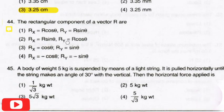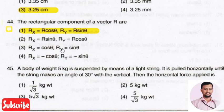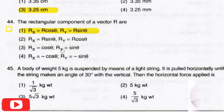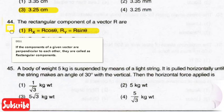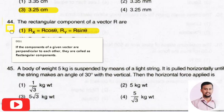The next question: the rectangular components of a vector R. The right answer is option 1 — the rectangular component in the x-direction is Rx = R cos θ, and in the y-direction Ry = R sin θ. If the components of a given vector are perpendicular to each other, then such components are called rectangular components.